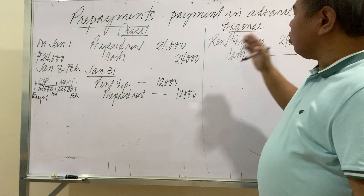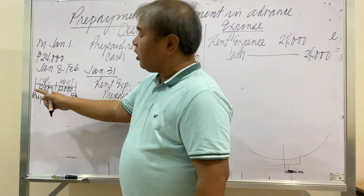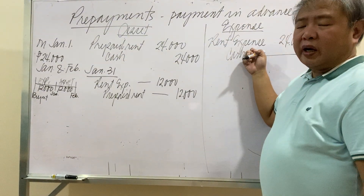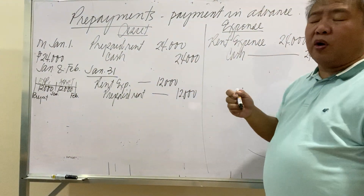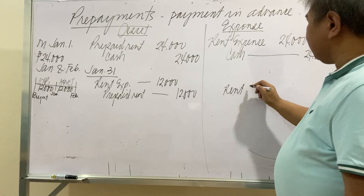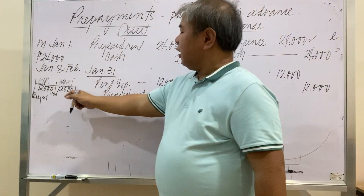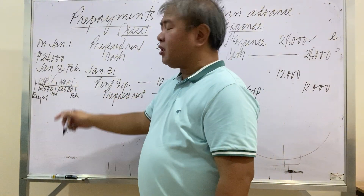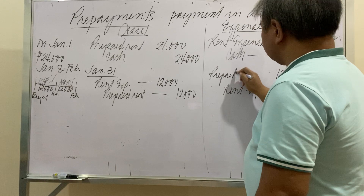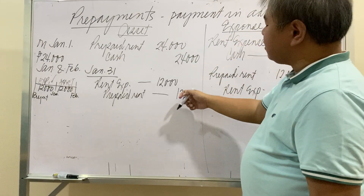Under the expense method, we initially charged the full payment to Rent Expense for 24,000. But the expense should only be 12,000. So we decrease rent expense by crediting it for 12,000, and record the unused asset by debiting Prepaid Rent for 12,000. That is your adjusting journal entry under the expense method.